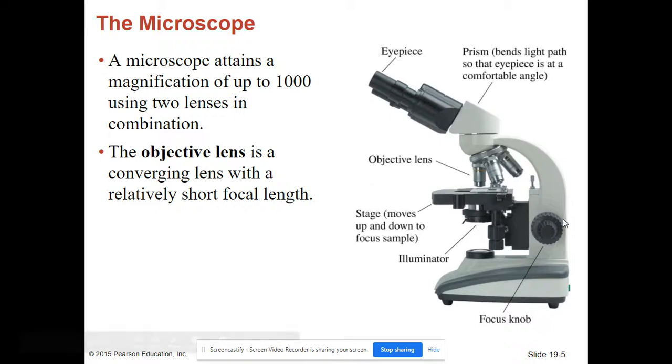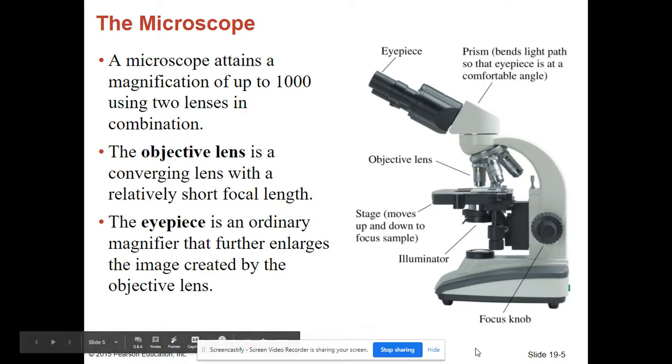So a microscope has an objective lens, you can see right here. The eyepiece is an ordinary magnifier that further enlarges the image created by the objective lens, and then you have the eyepiece.